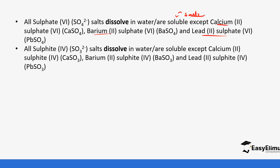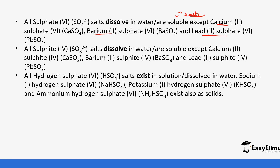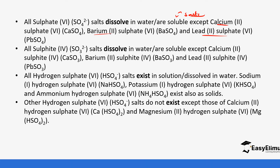All sulfites also dissolve in water except the same three exceptions: calcium sulfite, barium sulfite, and lead sulfite. All hydrogen sulfates exist in solution when dissolved in water, except sodium hydrogen sulfate, potassium hydrogen sulfate, and ammonium hydrogen sulfate, which also exist as solids. Other hydrogen sulfates — such as calcium hydrogen sulfate and magnesium hydrogen sulfate — do not exist as solids.